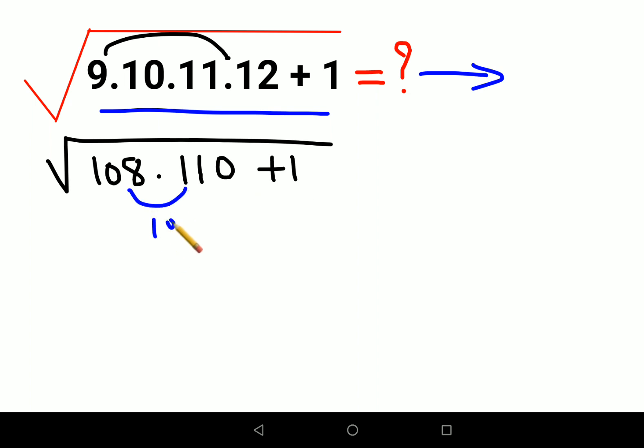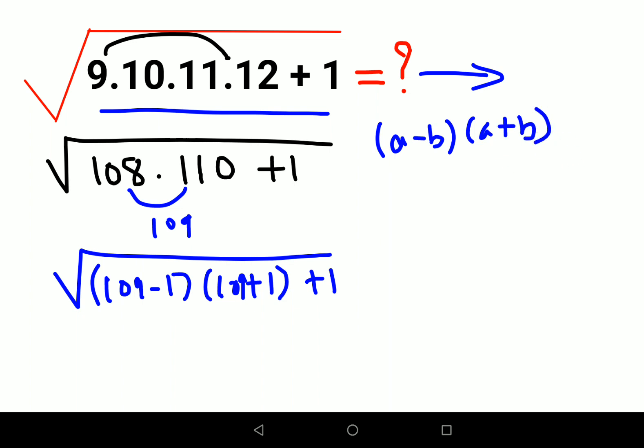I can write 108 as 109 minus 1, and 110 as 109 plus 1, and then you have plus 1. So now this again is in the form of a minus b into a plus b. Again we'll use that expansion and that gets you 109 square minus 1 square plus 1.